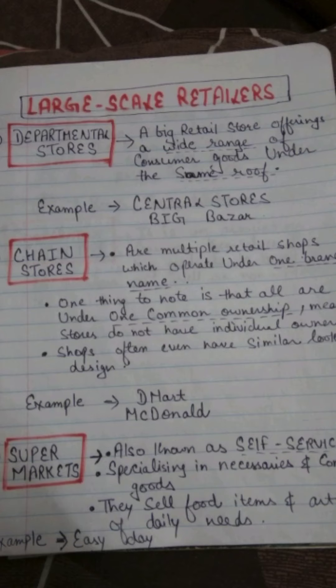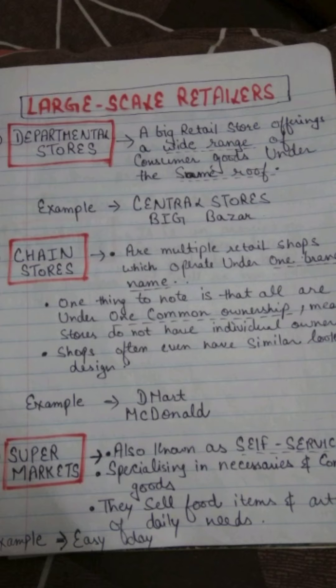Large-scale retailers have big enterprises and deal in a variety of goods. They are classified into five categories. First are departmental stores — big stores offering a wide range of consumer goods under the same roof, such as grocery stores, supermarkets, Big Bazaar, and Central stores. Second are chain stores — multiple retail shops operating under one brand name, with one common ownership, unlike a franchise.